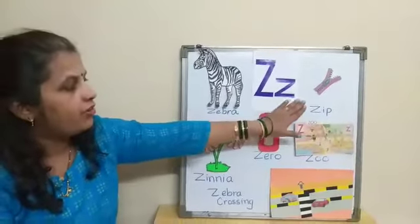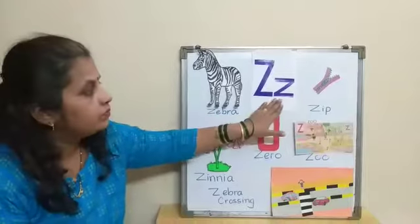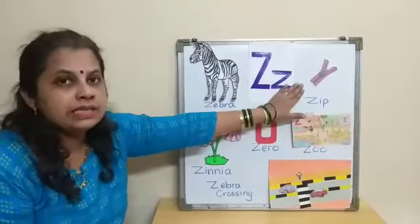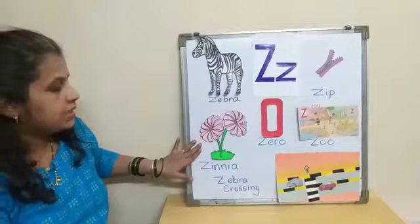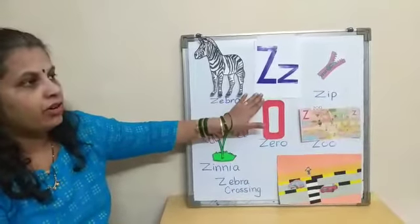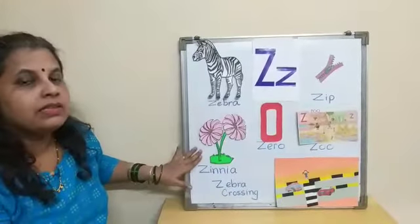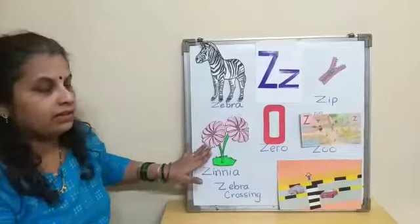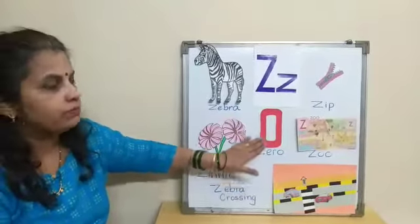Z for zip. Z for zinnia. Zinnia is a flower. Z for zero.